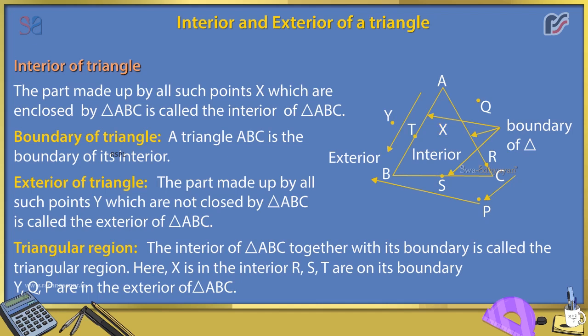Here, X is in the interior. R, S, T are on its boundary. Y, Q, P are in the exterior of triangle ABC.